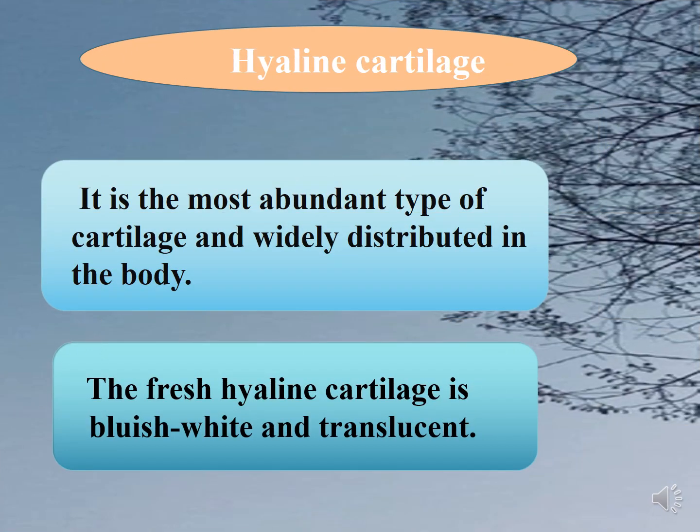Hyaline cartilage is the most abundant type of cartilage and is widely distributed in the body. In a fresh state, hyaline cartilage appears bluish-white and translucent.